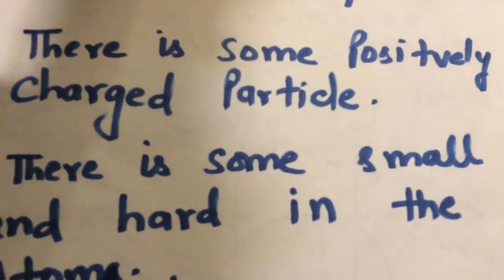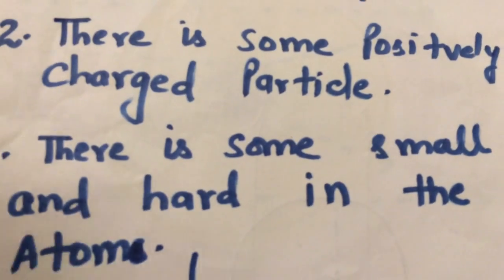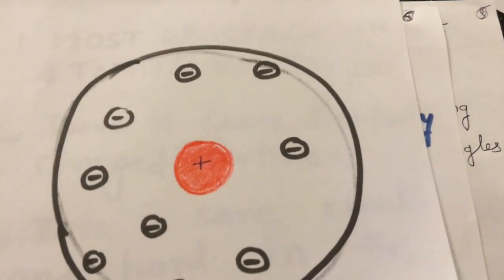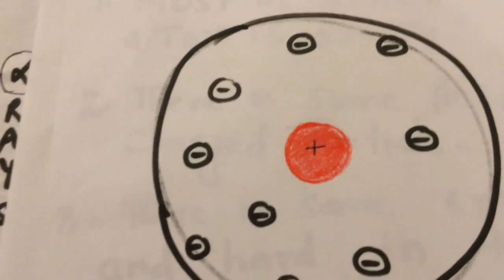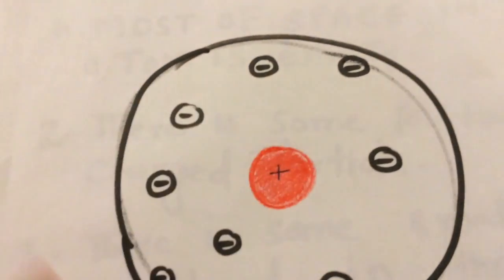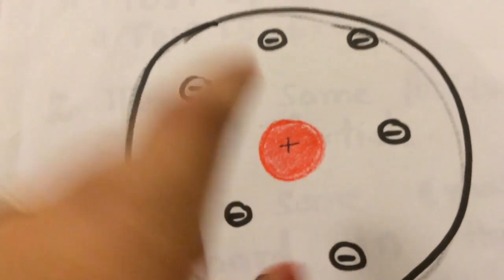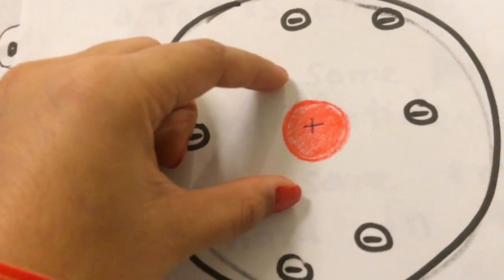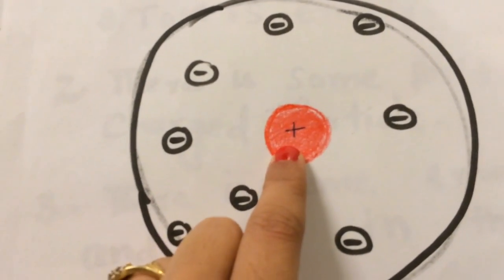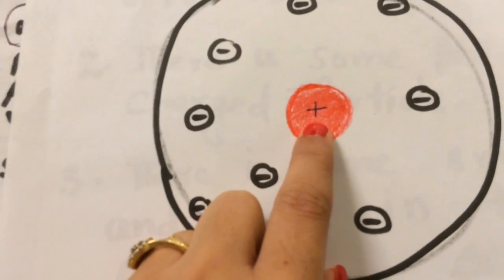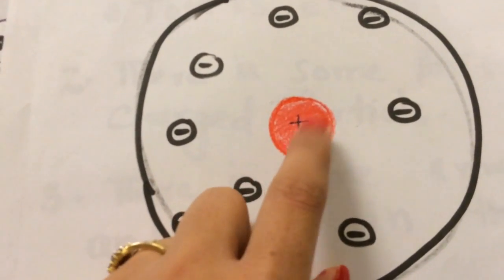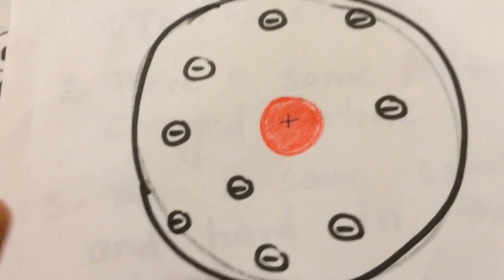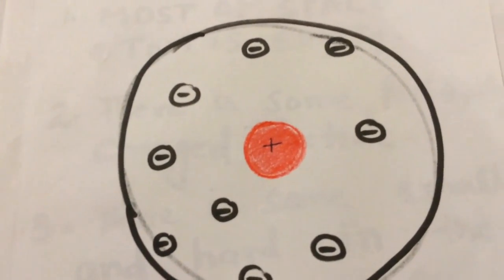Based on these conclusions, Rutherford put forward the nuclear model of the atom. He proposed that there is a positively charged center in the atom called the nucleus, and nearly all the mass of the atom is concentrated in this nucleus. The size of the nucleus is very small compared to the overall size of the atom.